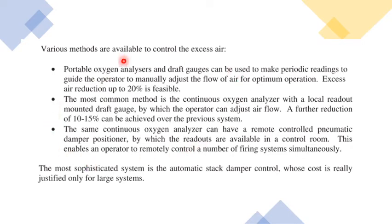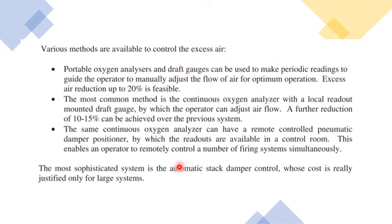Different methods are available to control excess air. Portable flue gas analyzers and draft pressure gauges can be used to make periodic readings to guide the operator to manually adjust the flow of air. These instruments allow analysis of how much excess air is entering the boiler, enabling corrective actions to be taken for optimum operation and improved boiler efficiency.